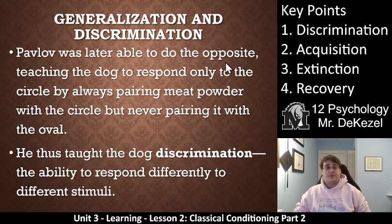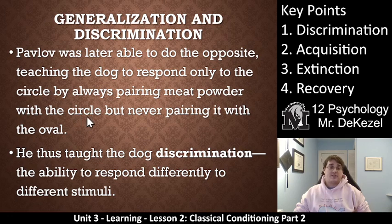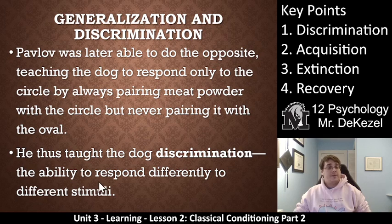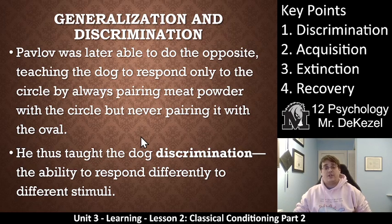Pavlov was later able to do the opposite, teaching the dog to respond only to the circle by always pairing meat powder with the circle but never pairing it with the oval. He thus taught the dog discrimination — the ability to respond differently to different stimuli. For example, after a different tone of a bell, no meat powder would be given, and eventually the dog would realize that tone did not mean food and would not salivate.